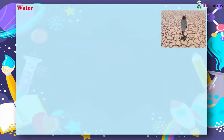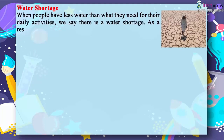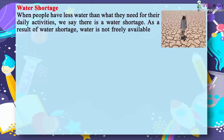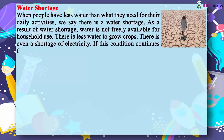Water shortage. When people have less water than what they need for their daily activities, we say there is a water shortage. As a result of water shortage, water is not freely available for household use, there is less water to grow crops, and there is even a shortage of electricity. If this condition continues for a year or two, we say that we are facing a drought.